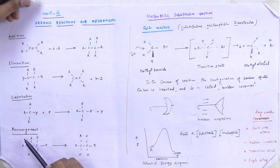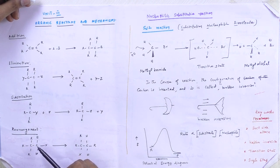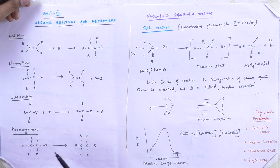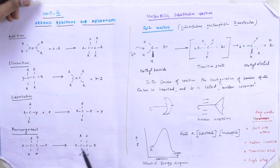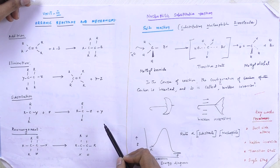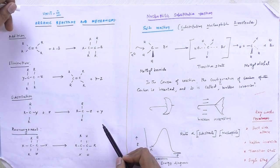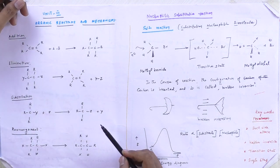The last type is rearrangement. Without altering any atoms, the groups are simply interchanged — it is called rearrangement. Here, R and X are interchanged with each other. So these are the four types of reactions in our syllabus.